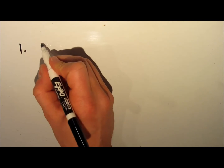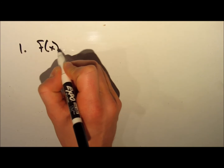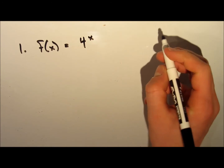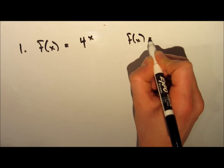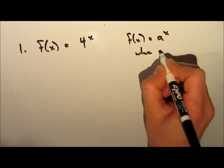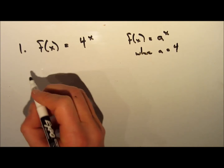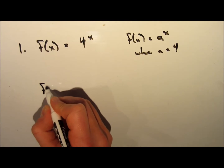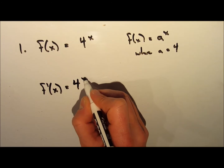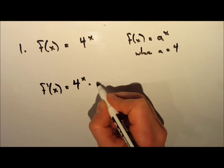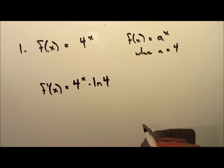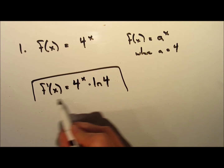For our first problem, we're going to take the derivative of f(x) = 4ˣ. This follows the formula f(x) = aˣ, where a = 4. So following that same formula, f′(x) = 4ˣ multiplied by ln(4). That's our final answer — it's that simple.